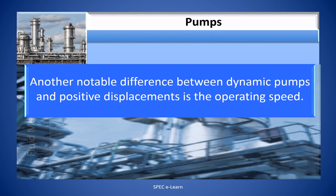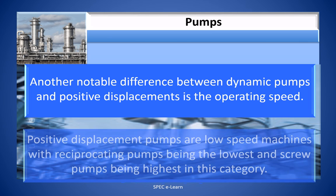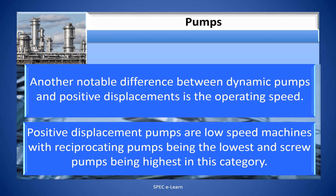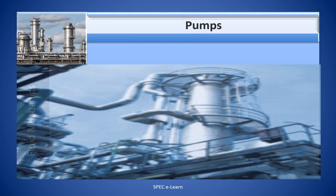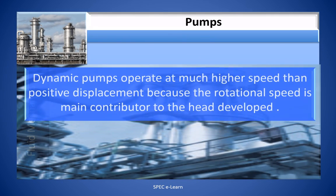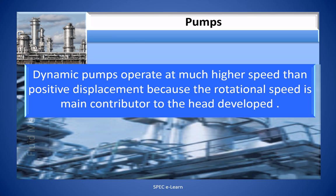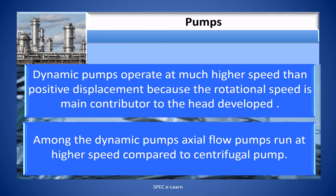Another notable difference between dynamic pumps and positive displacement pumps is operating speed. Positive displacement pumps are low-speed machines, with reciprocating pumps being the lowest and screw pumps being the highest in this category. Dynamic pumps operate at much higher speed than positive displacement pumps because the rotating speed is a main contributor to the heat developed. Among dynamic pumps, axial flow pumps run at higher speed compared to centrifugal pumps.